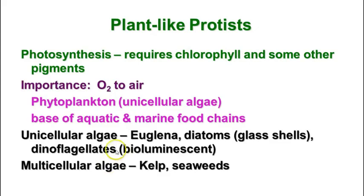The plant-like protists undergo photosynthesis. Photosynthesis requires chlorophyll and often some other pigments to trap the energy from light, split water, and provide energy to make sugars. They're very important because they are the major contributors to oxygen in the air. Although trees are important, Earth is about 70% covered with water, so the algae and phytoplankton produce a higher percentage of the oxygen. Phytoplankton are unicellular algae that float in the ocean and are the base of aquatic and marine food chains.